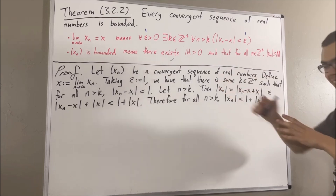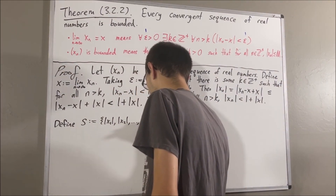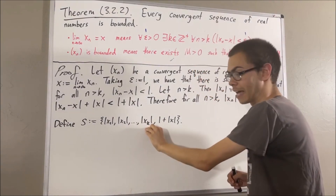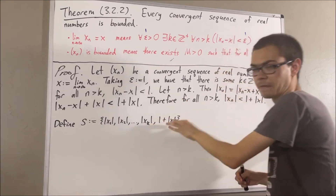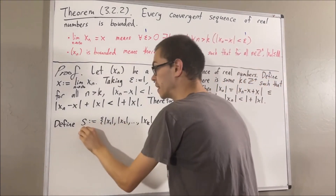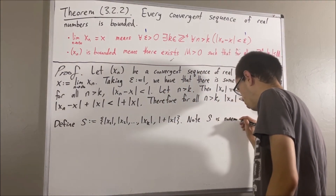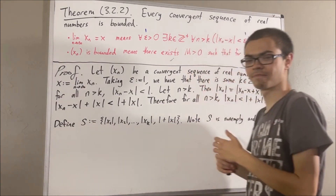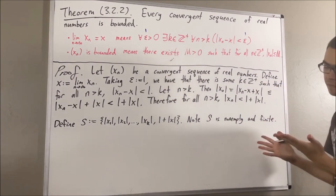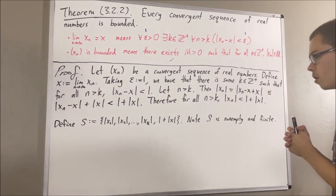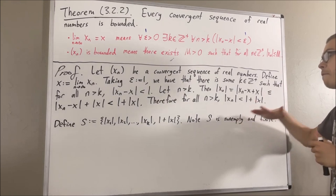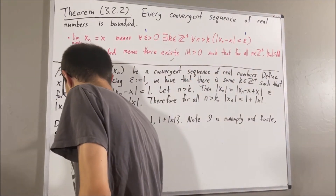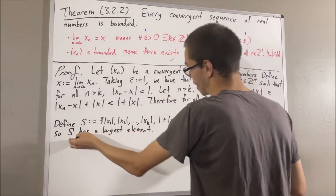Now we're going to define the following set. We define S to be the set consisting of the absolute value of x1, absolute value of x2, and so on up to absolute value of xk, and also including 1 plus the absolute value of x. Note that S is non-empty and finite. S is non-empty because, for example, 1 plus the absolute value of x is an element of S. Since every non-empty finite subset of real numbers has a largest element, S must have a largest element.